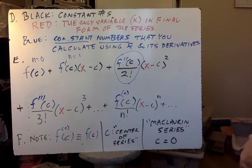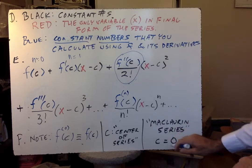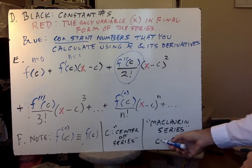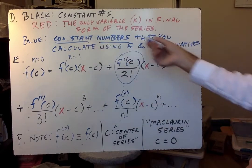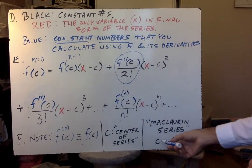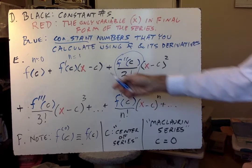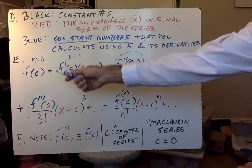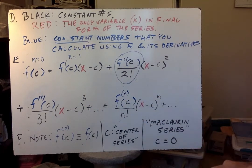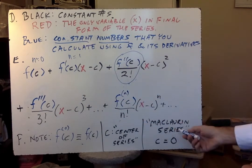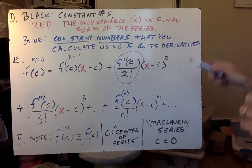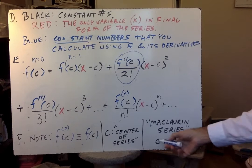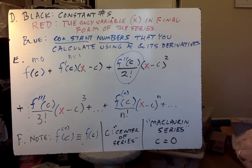When you see the term Maclaurin series, that's named after a different person who worked especially with series where c equals zero. So a Maclaurin series is a series exactly like this, it's just a Taylor series, exactly the same formula, but it has c equals zero, which simplifies a lot of things. This c goes away because it's zero. And the derivative is often easier to calculate when x equals zero. So a Maclaurin series is centered about x equals zero. And the quick way you say centered about x equals zero is to say c equals zero. C stands for center.